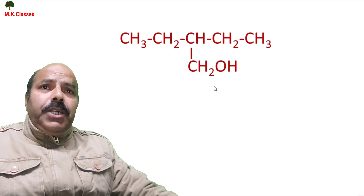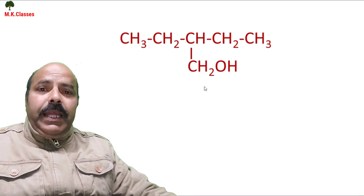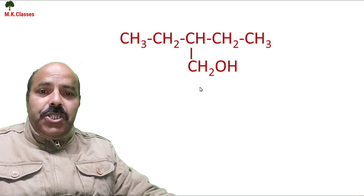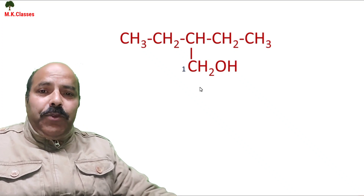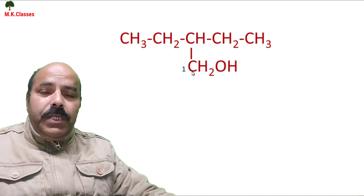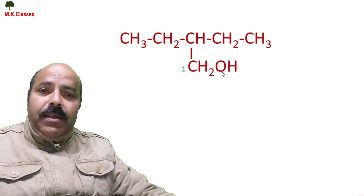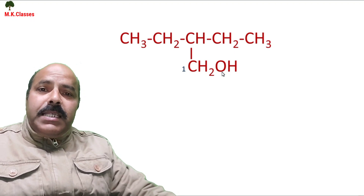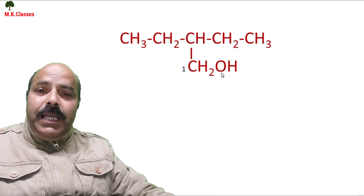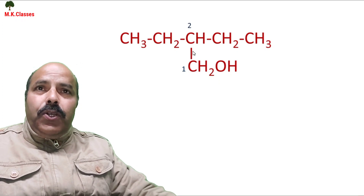We have to select the parent chain. Then we have to give the numbering. I am giving number one to this carbon which has a functional group attached. We have to give the lowest number to the carbon which has the functional group attached. So this is one, two, three and four.